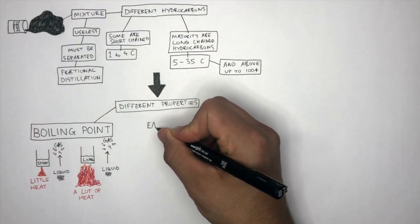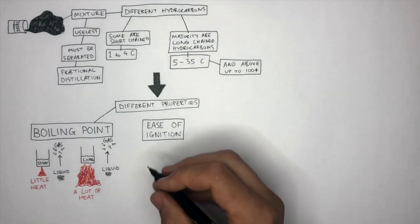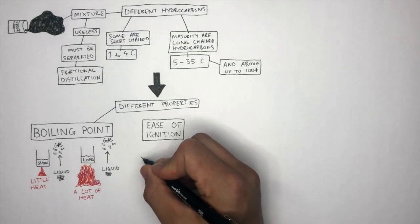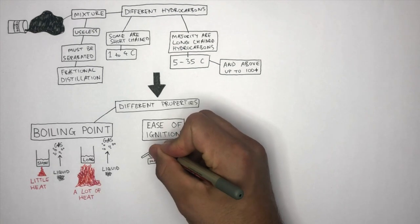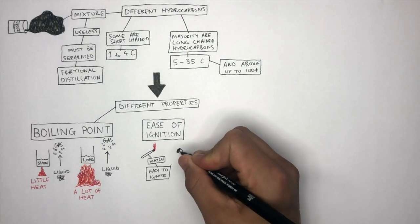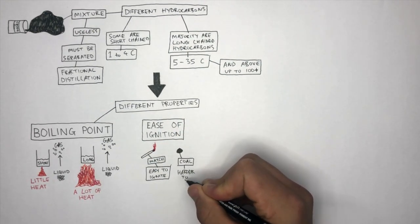The next property we're going to look at is ease of ignition. This is just how easy it is to set something on fire. For example, a match is very easy to ignite, whereas a lump of coal is much harder to ignite.